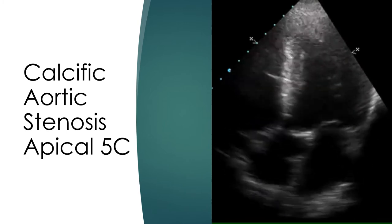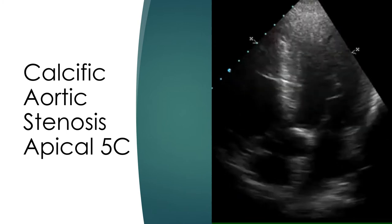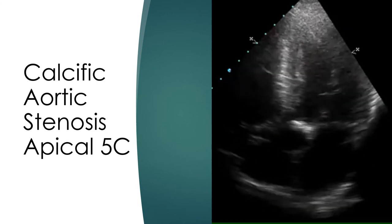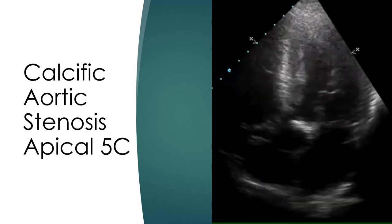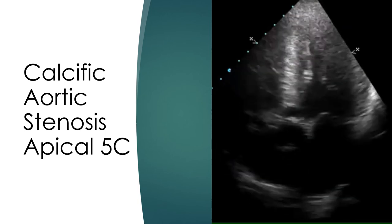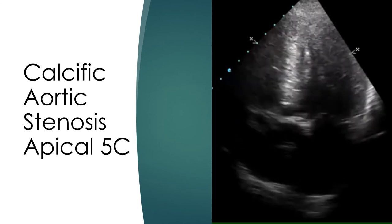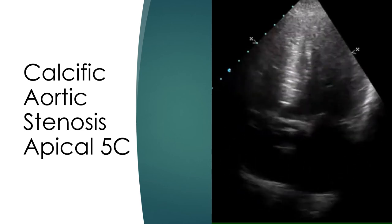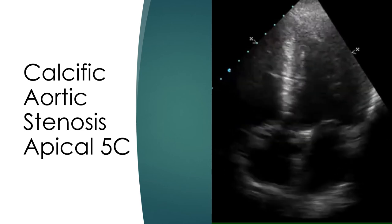Apical 5-chamber view showing the thickened aortic valve. This is the usual view used for estimating trans-valvar gradients as the Doppler beam is parallel to the jet in this view.